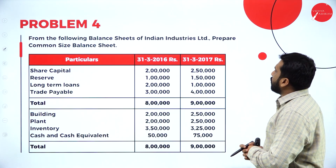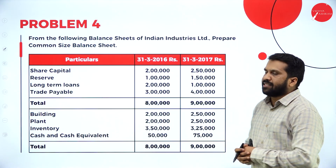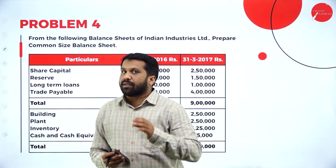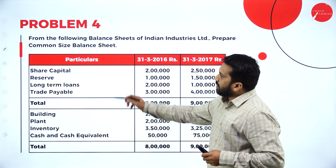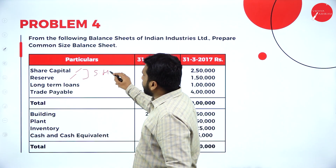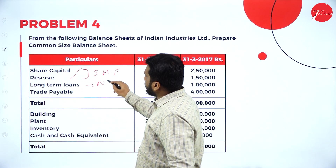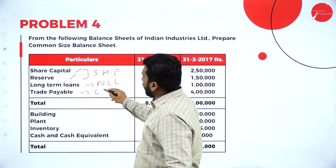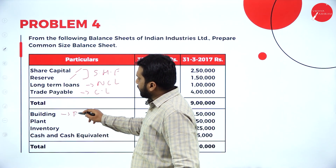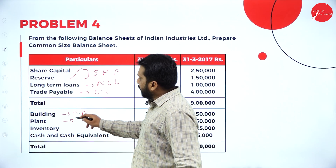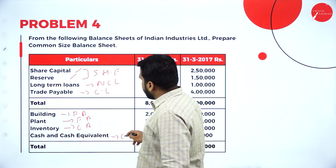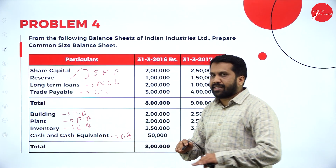From the following balance sheet of Indian Industries Limited, prepare a common size balance sheet. You already learned what is comparative — now we are doing common size. Common size means: share capital and reserve goes under shareholders fund, long-term loans under non-current liability, trade payable under current liability — three categories. Building and plant come under fixed asset, inventory and cash under current asset — two categories on the asset side.